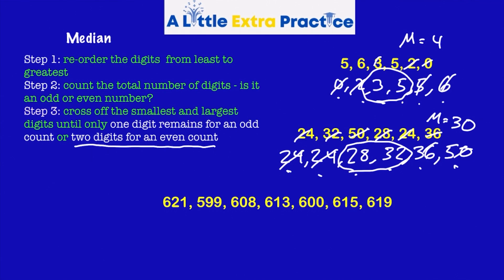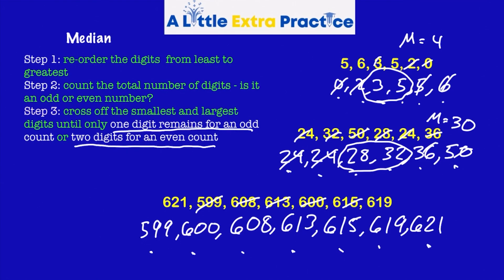The last set, larger numbers, but steps are the same. 599, 600, 608, 613, 615, 619, and 621. One, two, three, four, five, six, seven. So I'm going to cross off until only one digit remains. This is a little bit easier when they're odd. So my median is 613. So in this case, half the numbers are larger than 613. Half the numbers are smaller than 613. See you next time on a little extra practice.